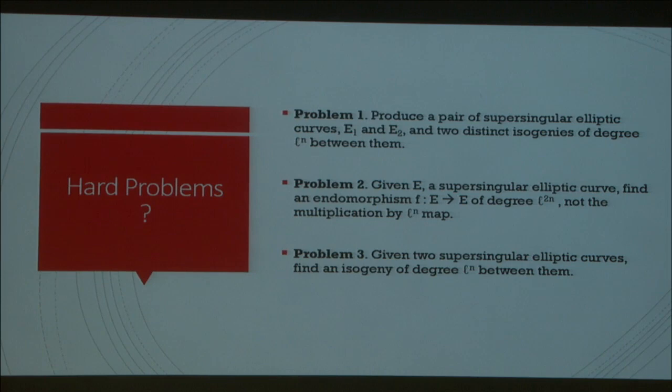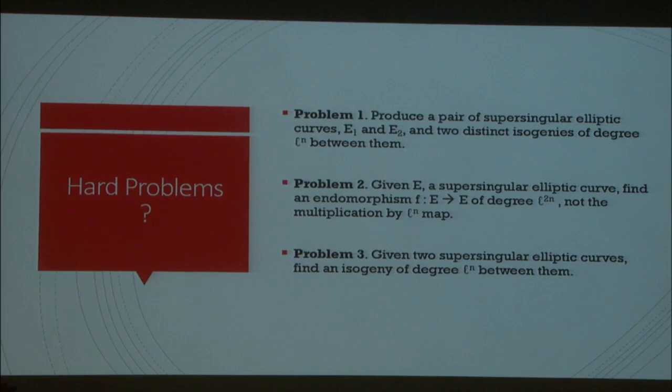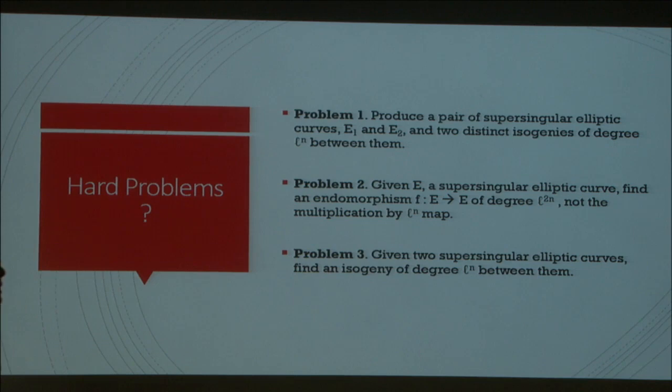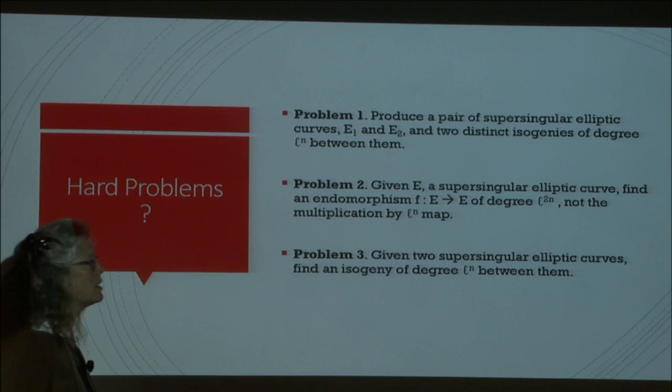That's not true in general of a curve — you don't necessarily have a group law or endomorphisms that are so nice. Elliptic curves that just have those natural maps — the scalar multiplication — are what we call the ordinary case. We're going to talk today about what it really means to be supersingular, and that's where you need to think about the endomorphism ring, which is actually a little bit bigger.